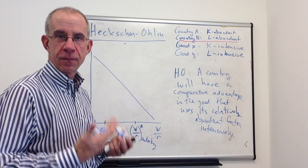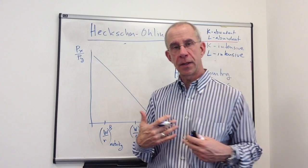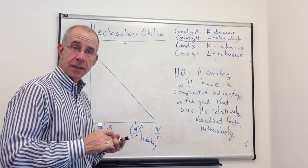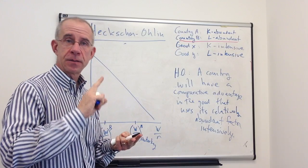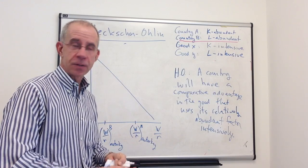So I want to look at a different version of Heckscher-Ohlin, strictly from the standpoint of factor prices. Now, if you recall, Heckscher-Ohlin assumes identical technologies, identical tastes, and differing relative factor endowments.